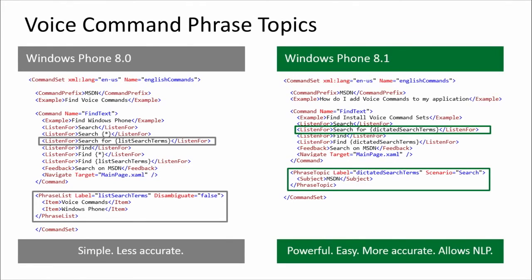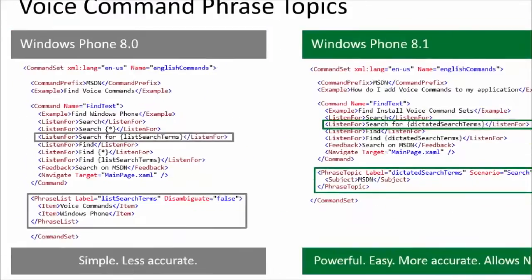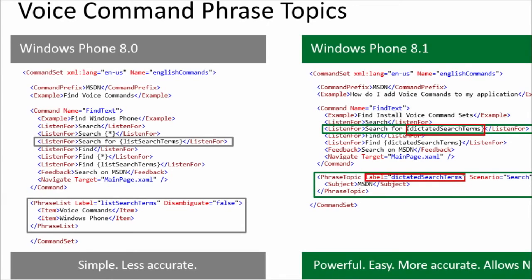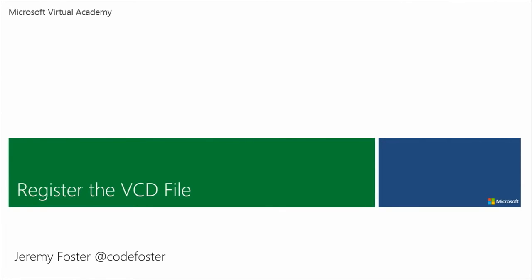Let's look at a side-by-side comparison of Windows Phone 8 versus 8.1. The ListenFor in the WP8 app has a slot in it called 'list search terms,' which matches the label on the phrase list — and those are the only two things that can be said for that slot. Whereas on Windows Phone 8.1, there's a slot called 'dictated search terms' using a phrase topic — brand new in Windows Phone 8.1. This topic uses a certain scenario and a list of subjects that gives Cortana help in figuring out exactly what your intent is.